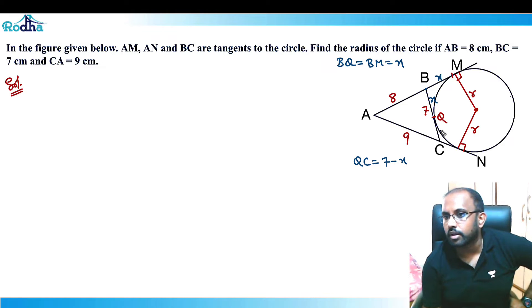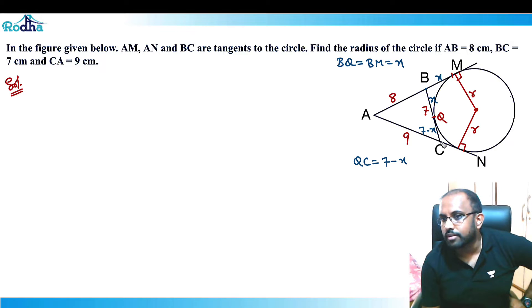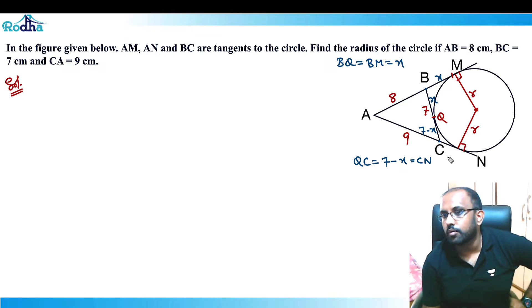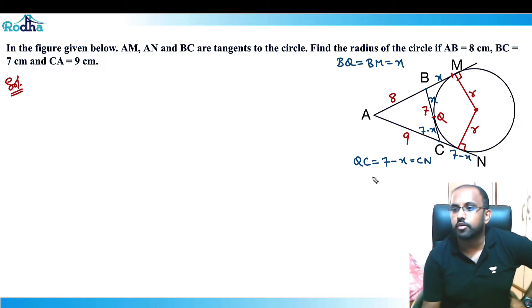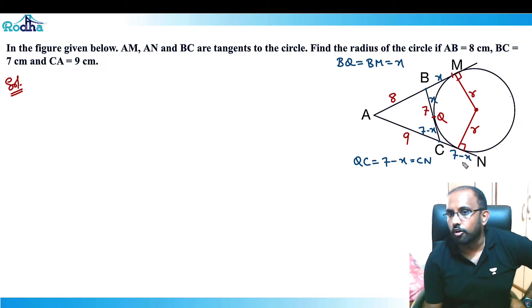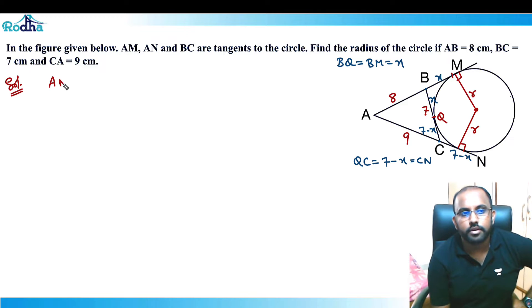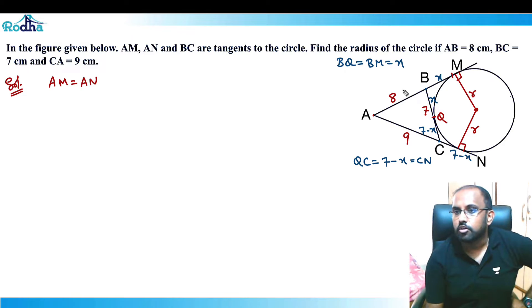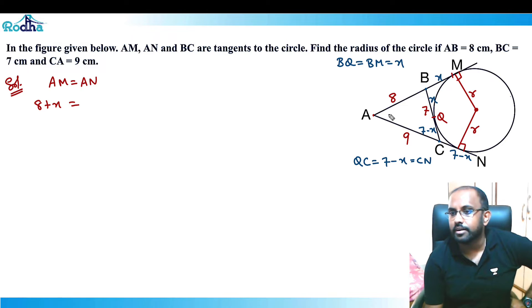Since QC and CN are also tangents from external point C, CN = QC = 7 − x. Similarly, AM and AN are tangents from external point A, so AM = AN.